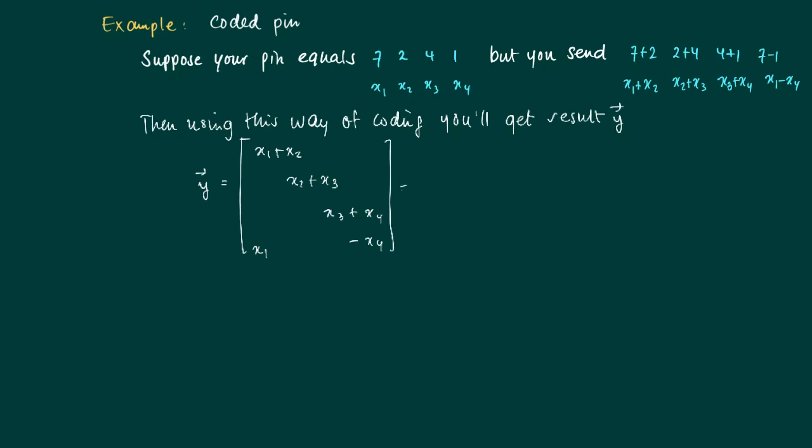You see that I'm writing this down in a very particular way so that you recognize that actually this is a matrix vector product. This is a matrix vector product where the matrix is given by 1, 1, 0, 0, 0, 1, 1, 0, 0, 0, 1, 1, and 1, 0, 0, minus 1, times the vector x. And the vector x with components x1, x2, x3, x4.